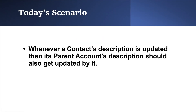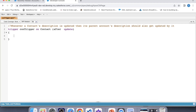Before starting our code, let's understand this scenario first. In today's scenario we are going to update the parent's description by its related contact's description on an update operation. Let's create our trigger — we want this trigger to be executed after the updation of a child record.